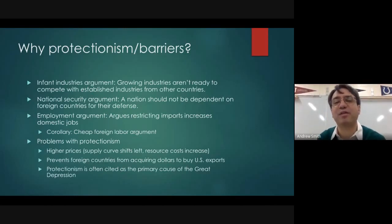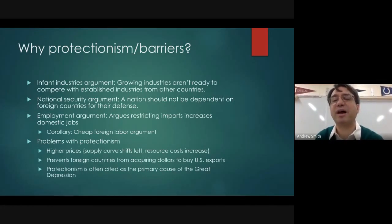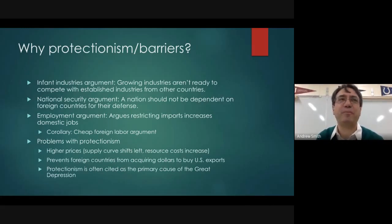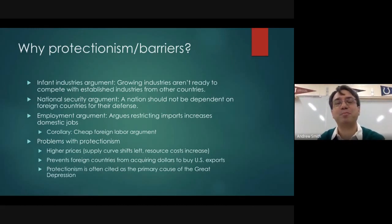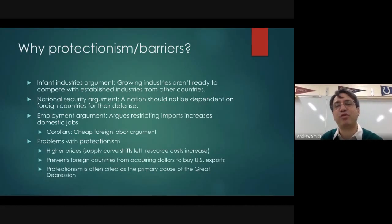The second argument is the national security argument, which basically states that a country should produce its own goods because it needs those goods for national defense. For example, we need tariffs on steel to protect our steelmakers because we might need that steel to build tanks and planes and bombs, and we should not rely on China for those things when China is an adversary.